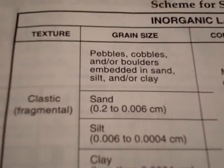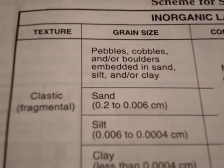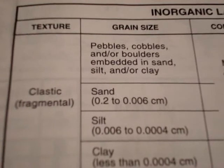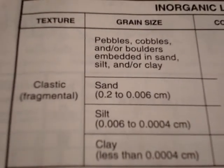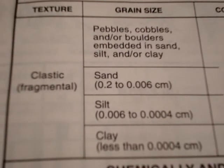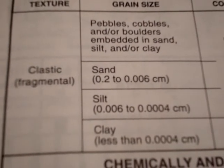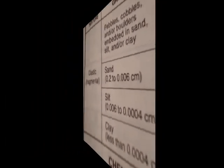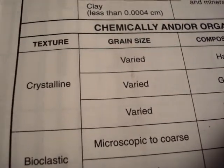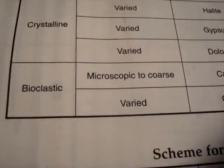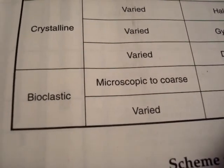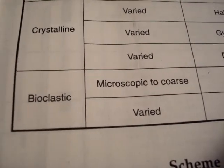So how do we go about identifying sedimentary rocks? It comes down to texture, and we have three types. One is clastic, meaning fragmental, where the rocks are composed of smaller pieces. The second is crystalline, where it looks like a crystal. The third is bioclastic, where it contains remains of plants and animals.